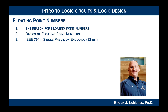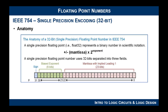Hey, this is Brock Lemares, and in this video we're going to look at the IEEE 754 encoding for single precision floating point numbers. IEEE 754 is a standard that was created in 1985 as a standard way for everybody who built computers and digital electronics to encode floating point numbers. We're going to first look at what we call single precision encoding, which uses 32 bits to represent the number.